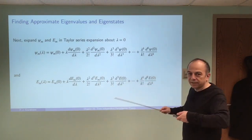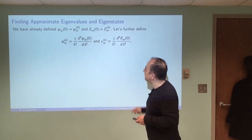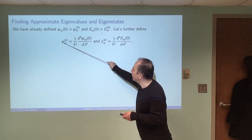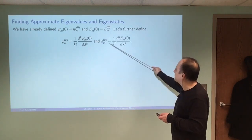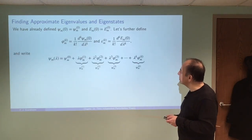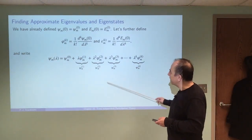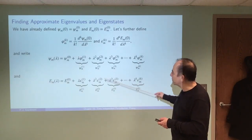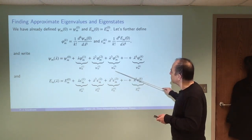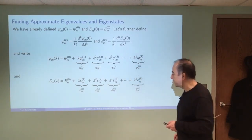I'm going to replace the unwieldy Taylor series expressions with more compact notation. I'll call the k-th derivative for the m-th eigenstate phi, and similarly for the k-th derivative of the energy for the m-th eigenvalue. With these definitions, the expansions become more compact. This gives the zeroth-order term plus the first correction, the second correction, the third correction, and so on for the m-th eigenstate and energy.